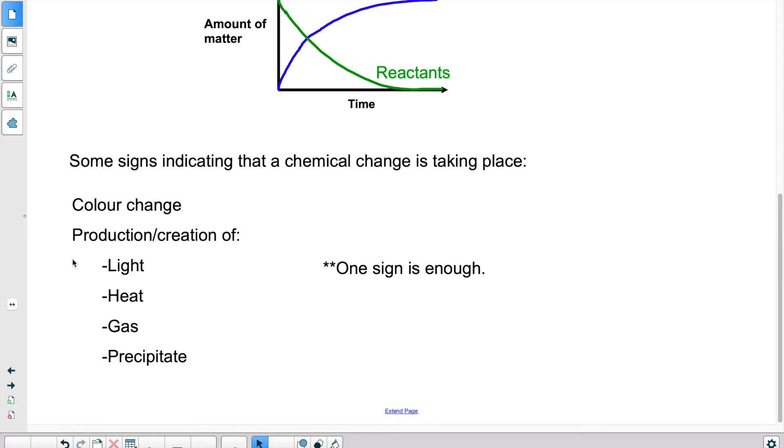It could be also that there is a production of light and or heat and or a gas and or a precipitate. So in the case of combustion, in the case of burning a piece of paper, you have the production of light, the production of heat and the production of a gas, carbon dioxide.